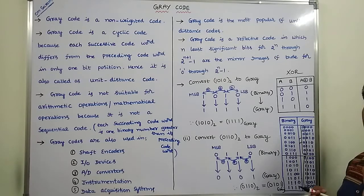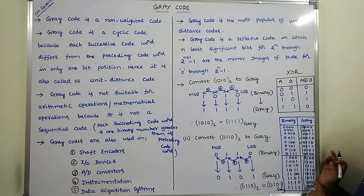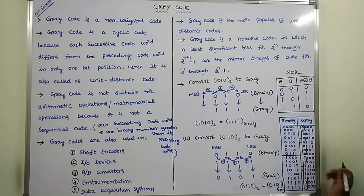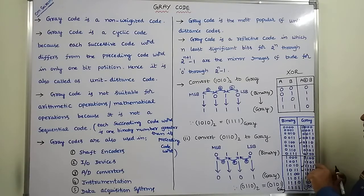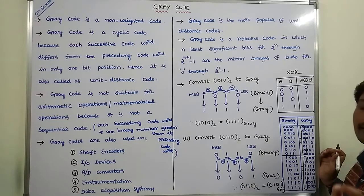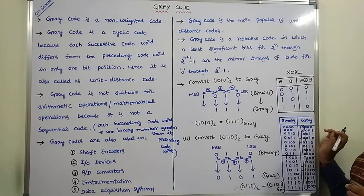Cyclic code is also called a unit distance code. Hence we can say that grey code is also called a unit distance code. In other words, in this grey code, if we take any two consecutive code words, those two code words differ only in one bit position. Hence that type of code is called a cyclic code, and grey code is also called a unit distance code.